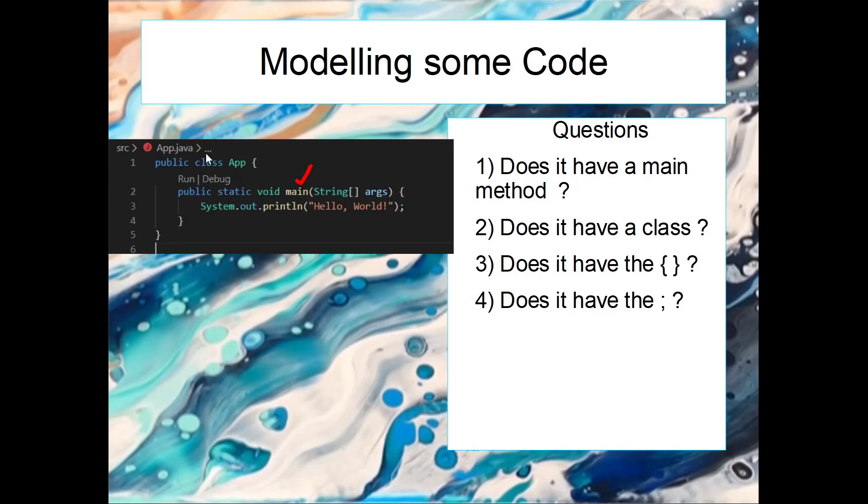Does it have a class? Yes, we've got the class here and we have the name of the class. So we know what the name of it is. Does it have the curly brackets? Well, we have the curly brackets to close off the class and we also have the curly brackets to close off the method. So we have the curly brackets.